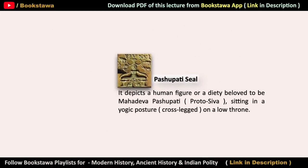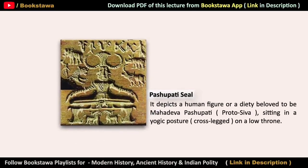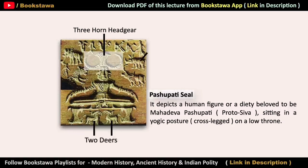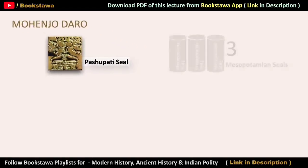The most important is the Pashupati Seal, which has also been found in the Indus Valley Civilization. This seal features a human figure resembling Mahadeva Pashupati, that is Proto-Shiva. He is seated on a low throne in a yogic posture, a Padmasana-type position, with a three-horned headgear resembling a Trishul-type crown. Below his throne there are two deer, on the right a rhino and a buffalo, and on the left a tiger and an elephant. This Pashupati Seal has been found in Mohenjo-daro.